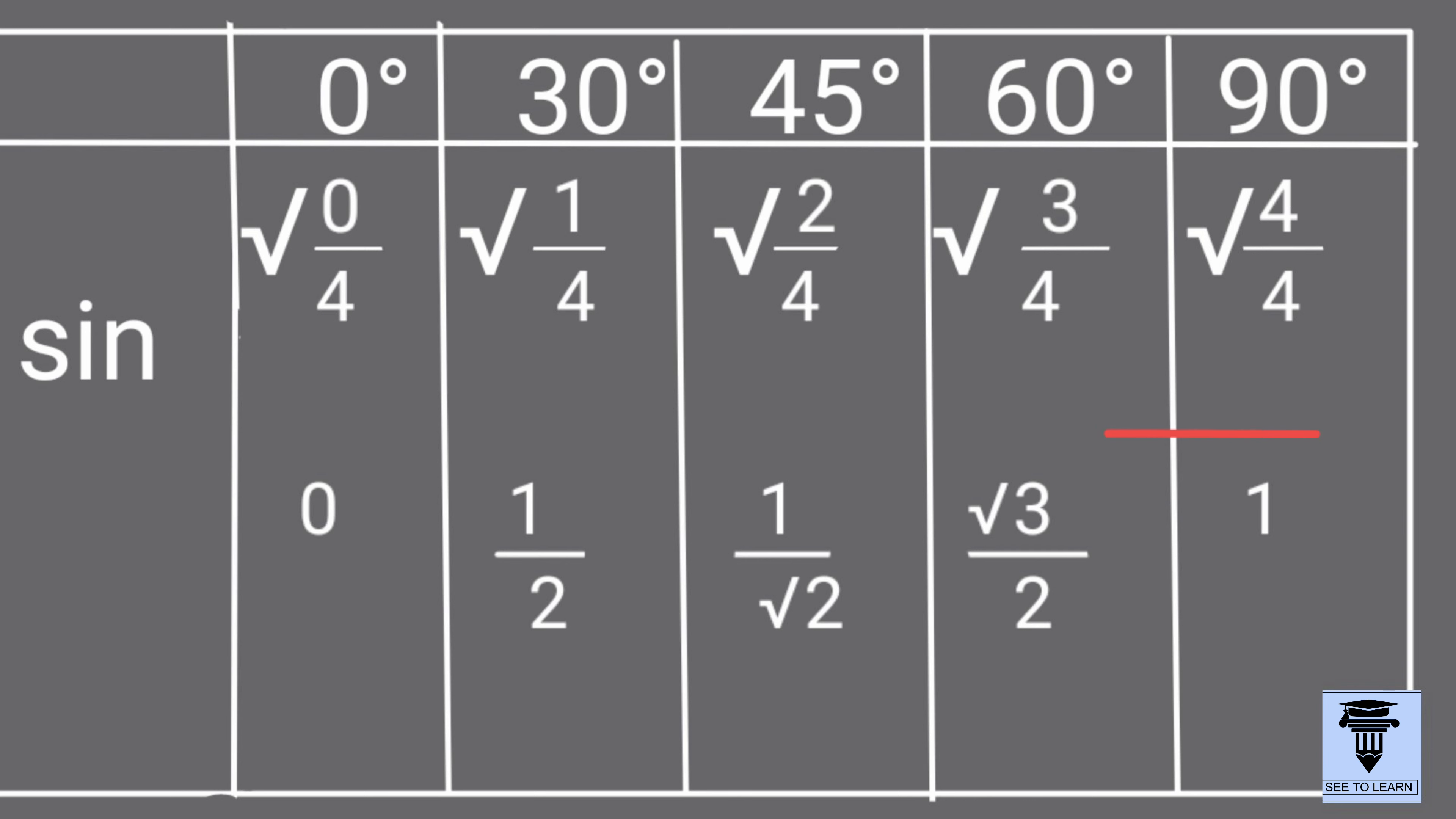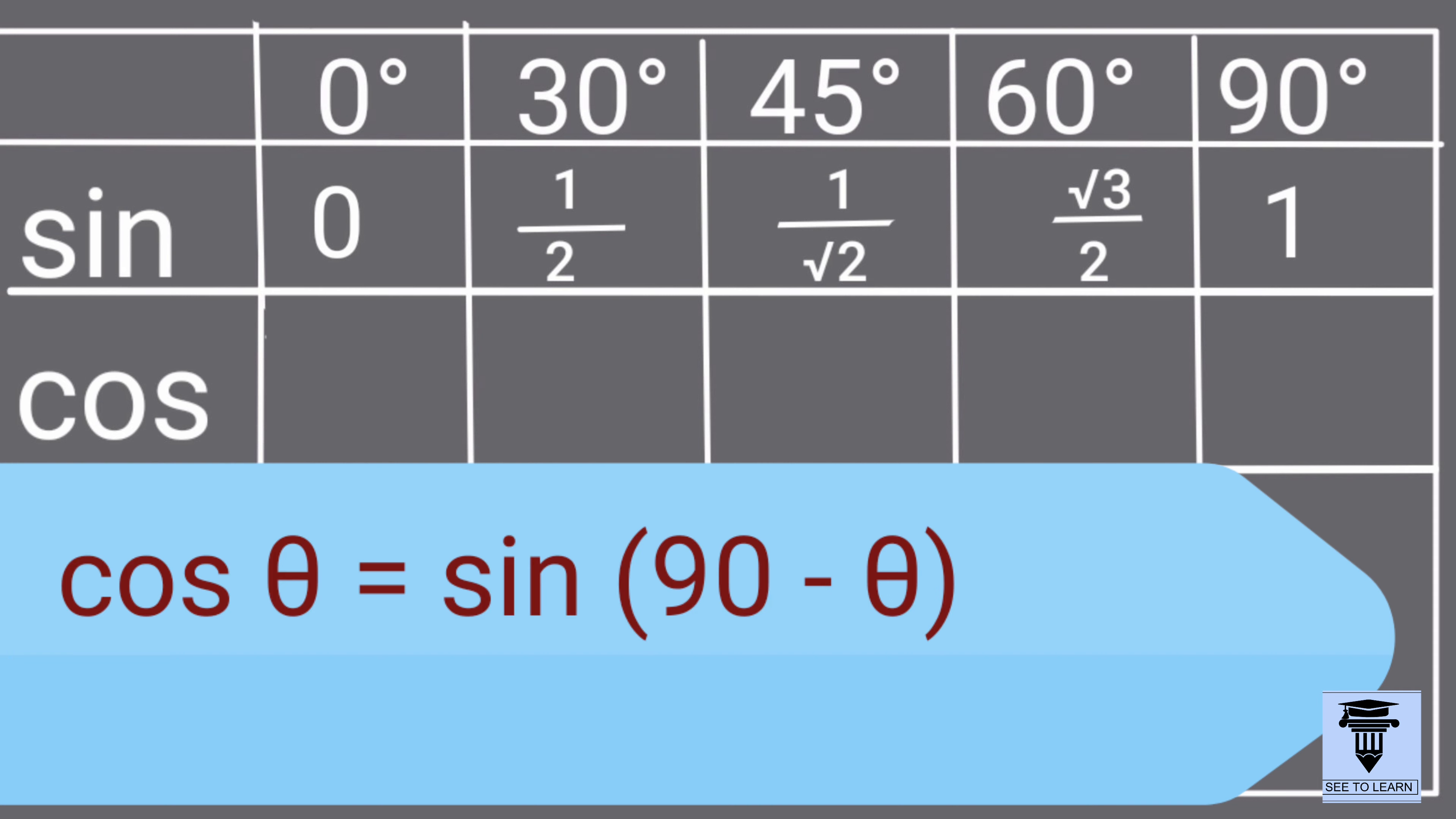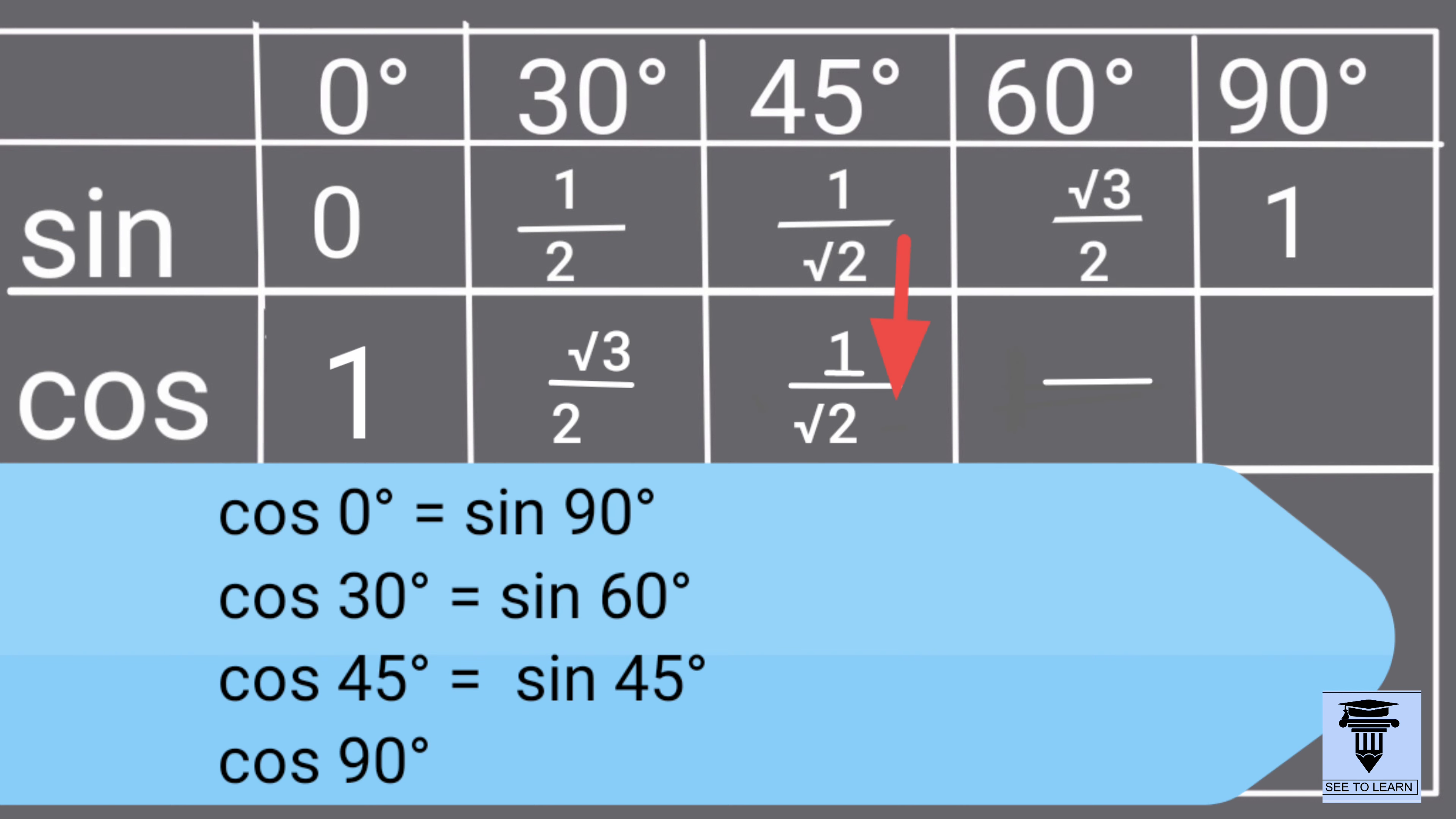Once we get the sin ratios, we can easily find the cos ratios. However, recall that cos theta is equal to sin 90 minus theta. So, cos 0 is equal to sin 90, cos 30 is equal to sin 60, cos 45 is equal to sin 45, cos 60 degrees is equal to sin 30, and cos 90 is equal to sin 0. Did you realize that I have just reversed the order?